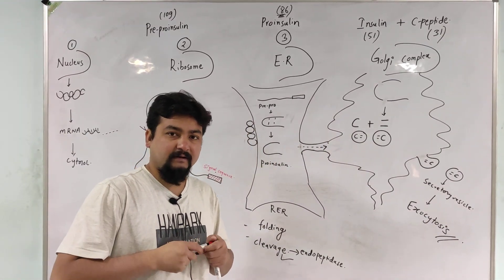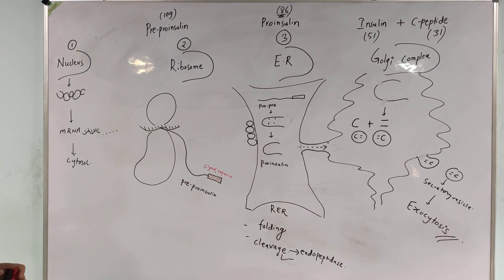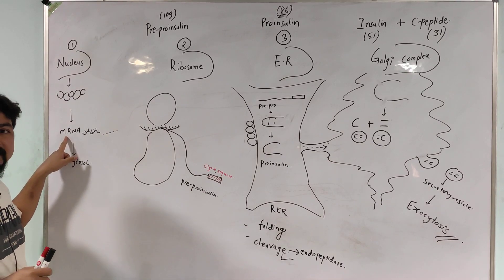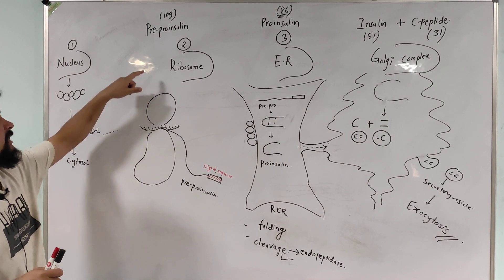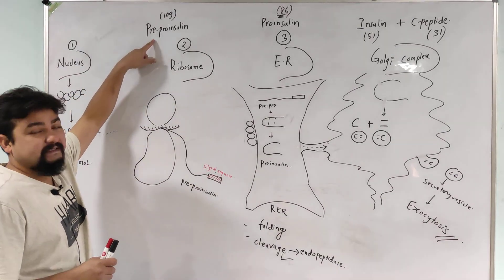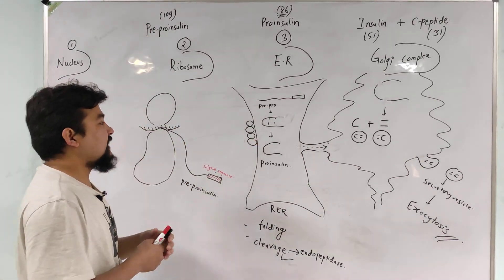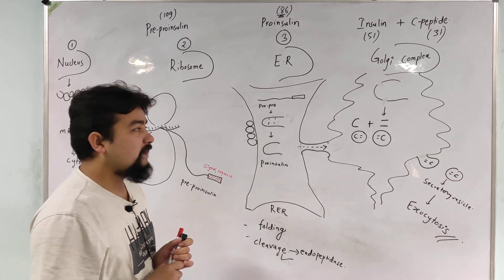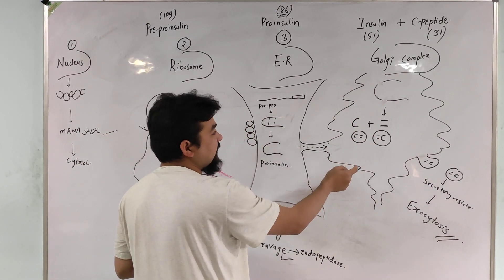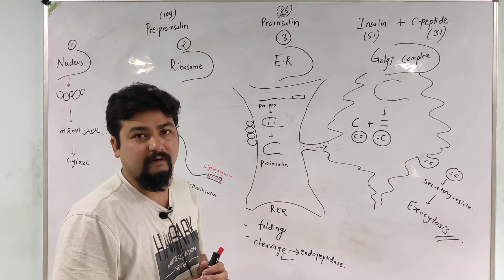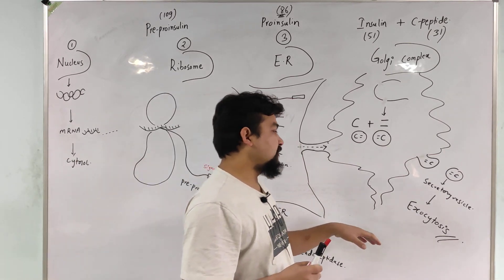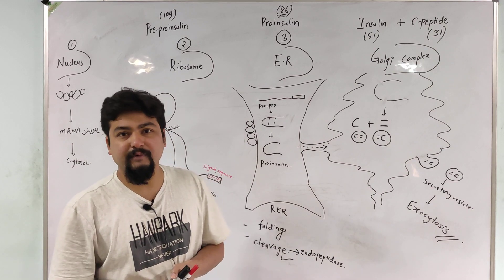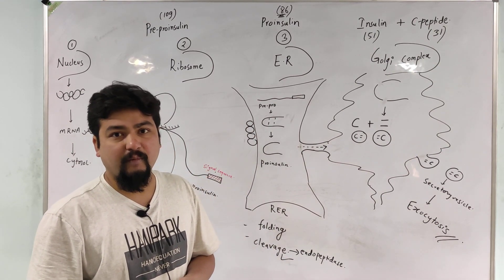In a nutshell, for insulin biosynthesis we should remember four different sites: first, the nucleus, from where mRNA gets synthesized carrying the message for insulin production; second, the ribosome, where pre-pro-insulin gets synthesized containing 109 amino acids; third, the endoplasmic reticulum, where pro-insulin gets synthesized; and fourth, the Golgi complex, where mature insulin and C-peptide get synthesized in equimolar concentrations. Finally, upon physiological stimulation, they come to circulation by the process known as exocytosis. Thank you very much — for any queries you can comment in the comment box.